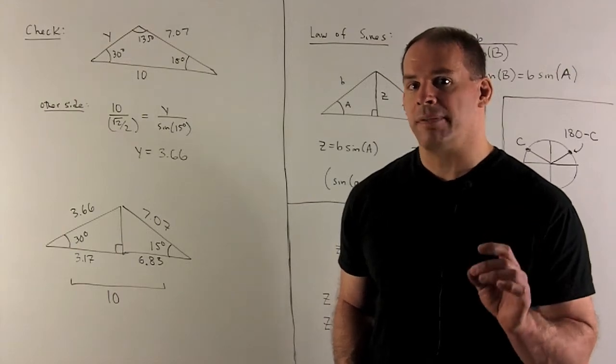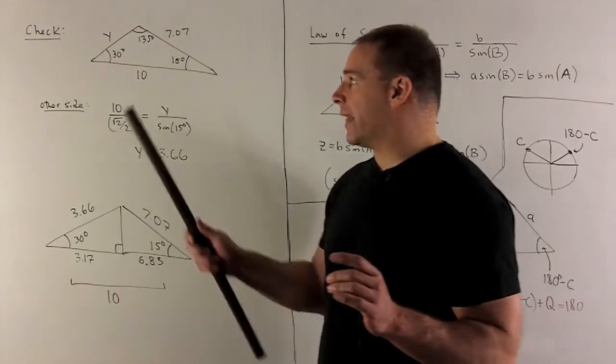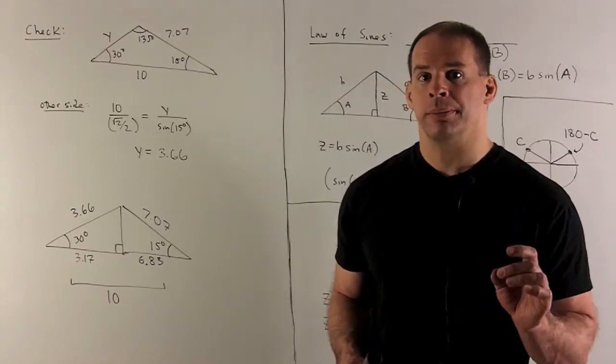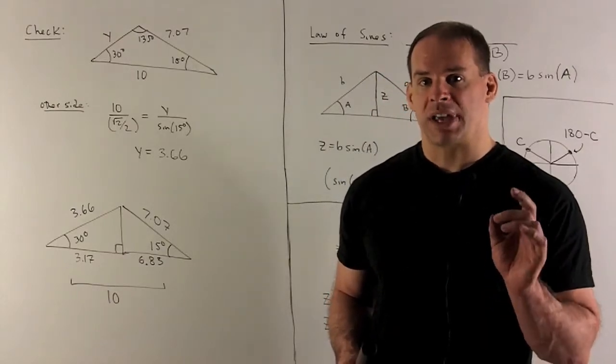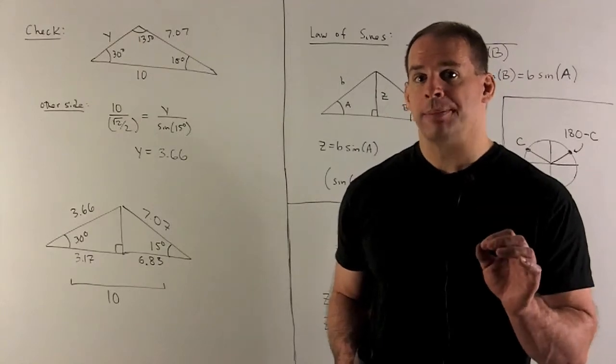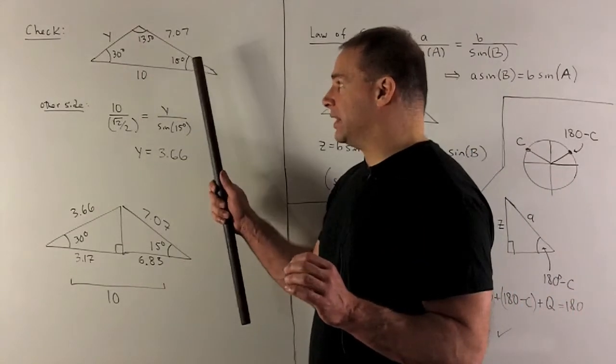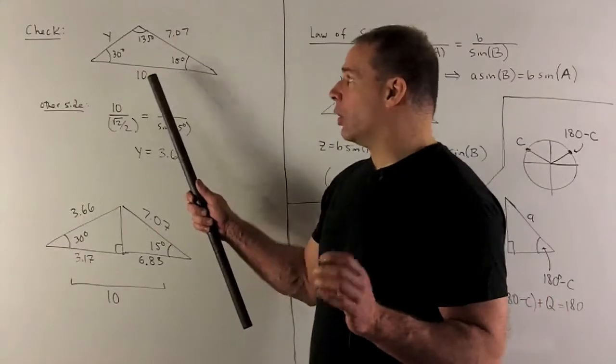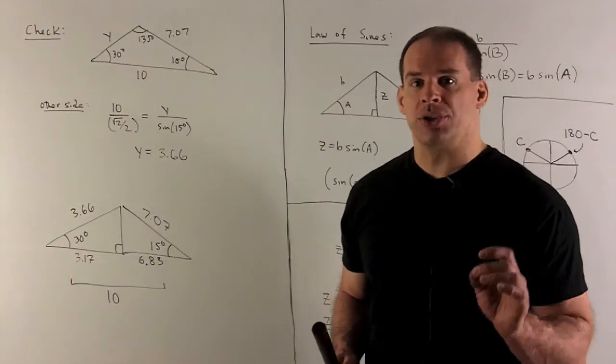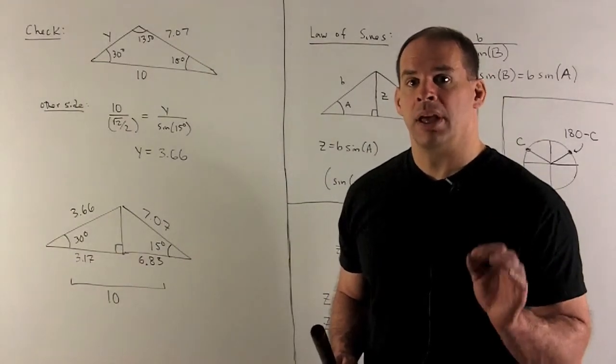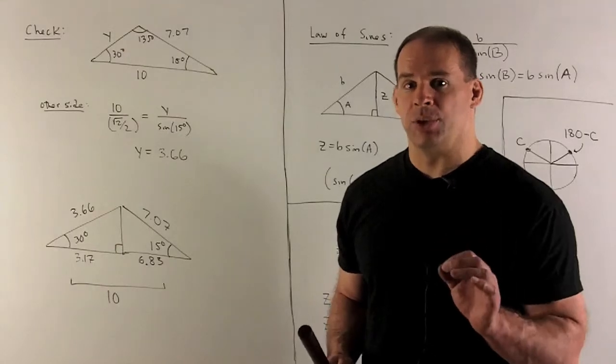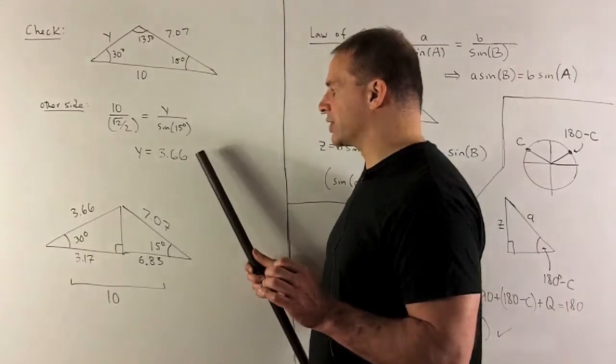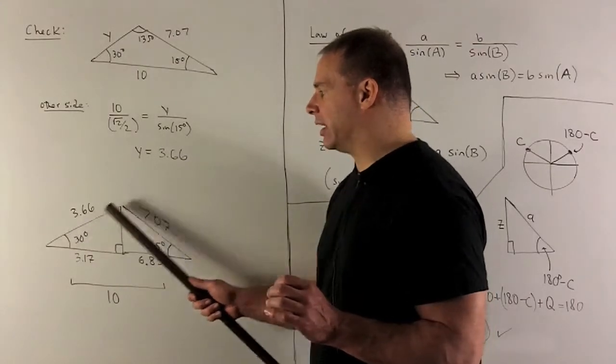Let's check our work. I'm going to solve for the missing side, call that Y. Then we're going to see if we can get all items on our triangle to hang together. We'll solve for Y using the law of sines again. Y over the sine of 15 degrees equals 10 over the sine of 135 degrees, which is square root of 2 over 2. We'll get that Y is roughly 3.66.